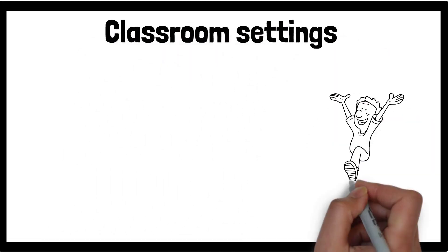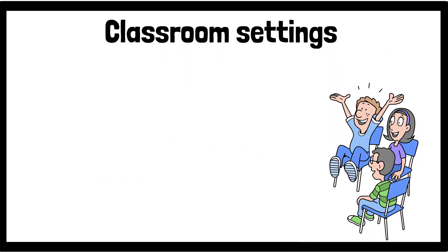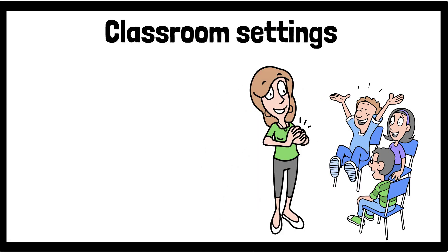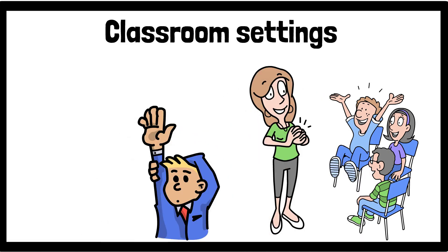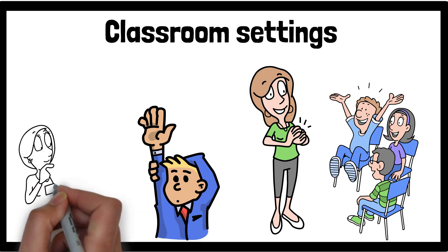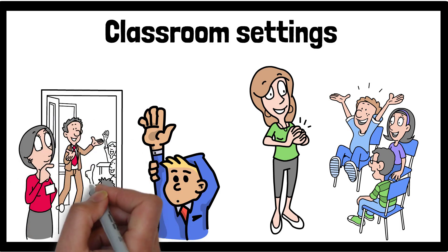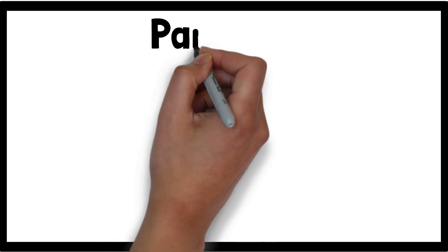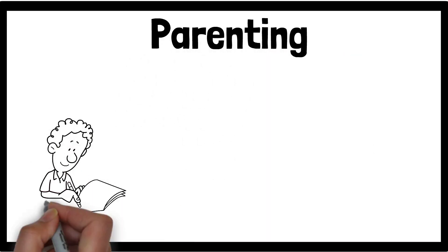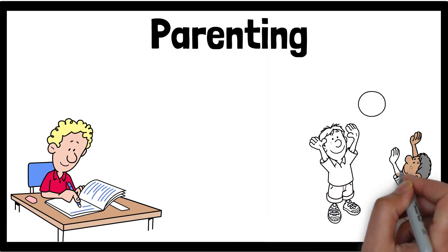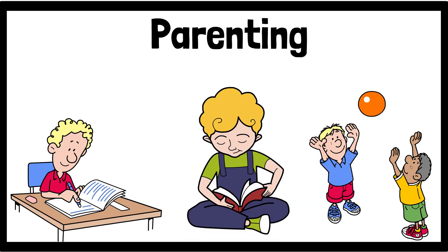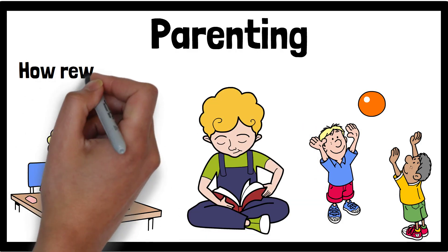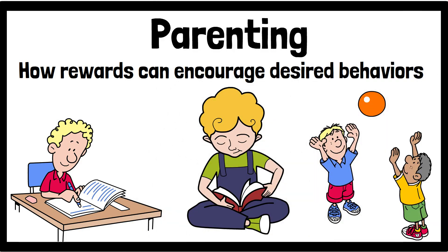Another example is seen in classroom settings. When a student answers a question correctly and receives praise from the teacher, they are more likely to participate in the future. The positive reinforcement of praise strengthens the behaviour of engaging in class. A third example can be found in parenting — when a child completes their chores and is rewarded with extra playtime, they are more likely to complete their chores consistently, illustrating how rewards can encourage desired behaviours.